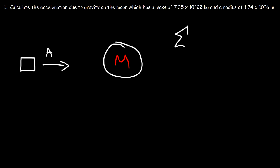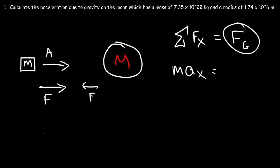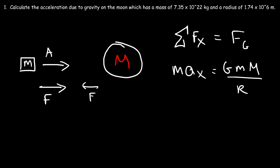Let's write an expression for the net force in the x-direction. The only force acting on this object is the force of gravity. The moon pulls on this object with a force Fg, and that object pulls on the moon with the same force. The net force, according to Newton's second law, is mass times acceleration. Lowercase m is the mass of the object and capital M is the mass of the moon. The gravitational force equals the gravitational constant times the two masses divided by the square of the distance between them.